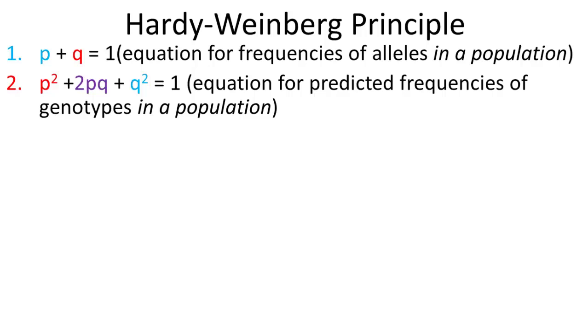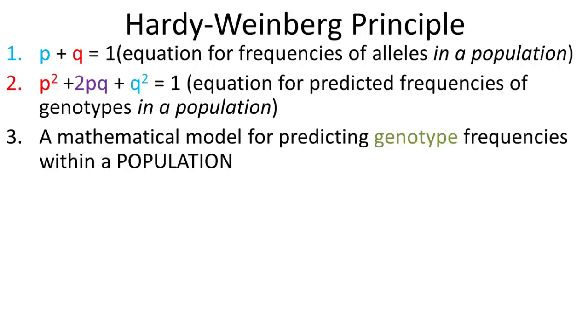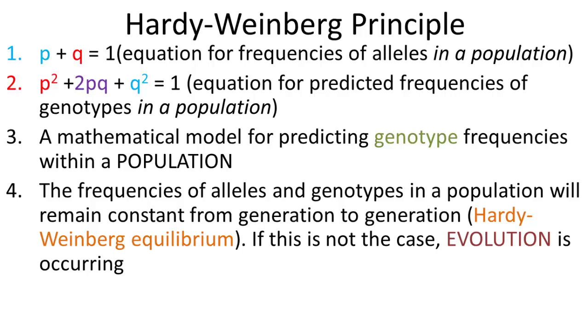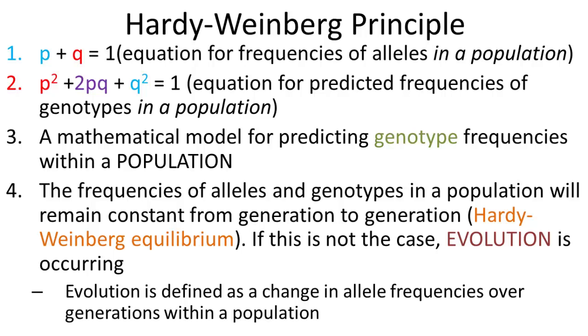We're looking at a population, and this is used for predicting genotypic frequencies within a population or determining if a population is evolving or not. If expected and observed model are different from one generation to the next, then evolution is said to be occurring. If not, then it's said to be in Hardy-Weinberg equilibrium.